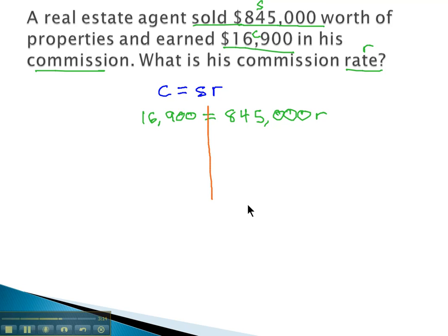We can quickly solve this equation for R to find, to answer our question, by dividing by 845,000 on both sides. When we do that on our calculator, $16,900 divided by 845,000, we get 0.02.